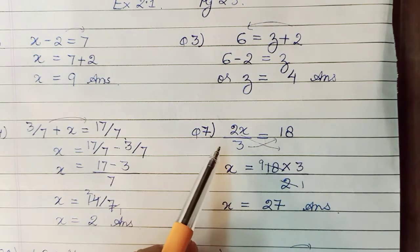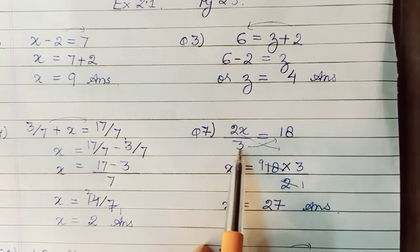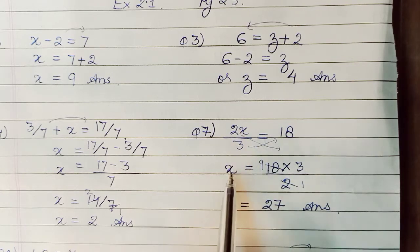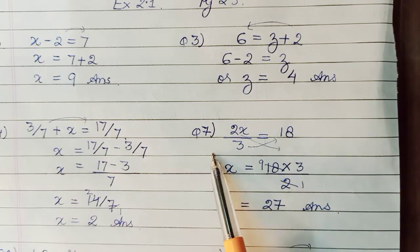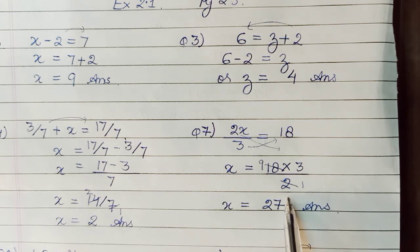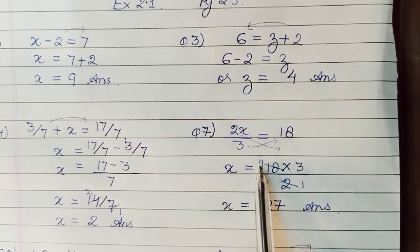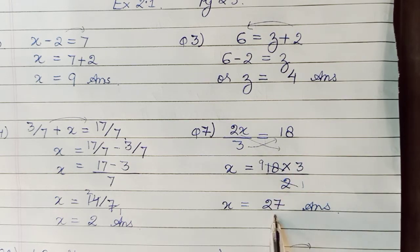So actually, the operation was we are multiplying this also by 3 upon 2. So that 3 and 3 and 2 and 2 gets cancelled and only x remains. Whatever calculations remain, whatever cancelling is possible, we will. So 2 1s are 2, 9s are 18. These 2 gets cancelled. So remaining will multiply. 3 9s are 27 is your answer.